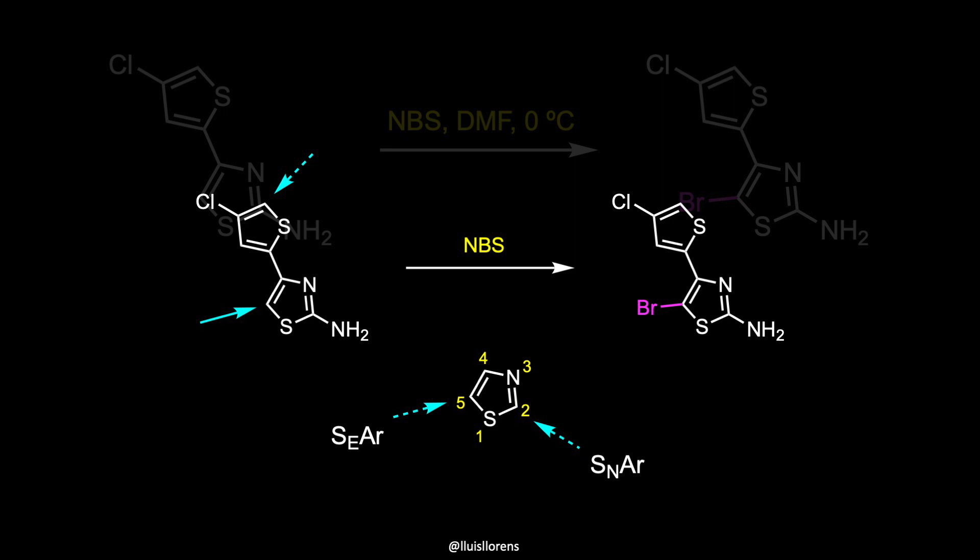However, the rate of electrophilic aromatic substitution reactions is greatly affected by the groups attached to the ring. Activating groups that donate electron density to the ring make the aromatic ring more electron-rich and the reaction faster.